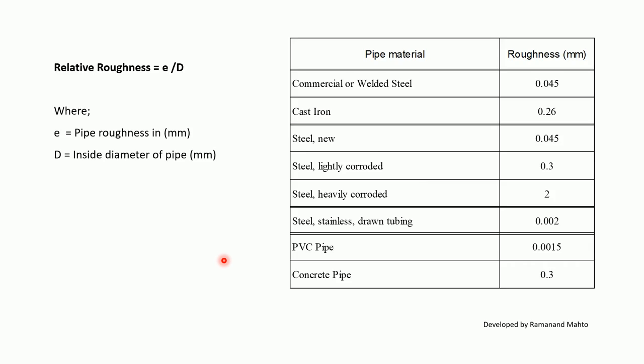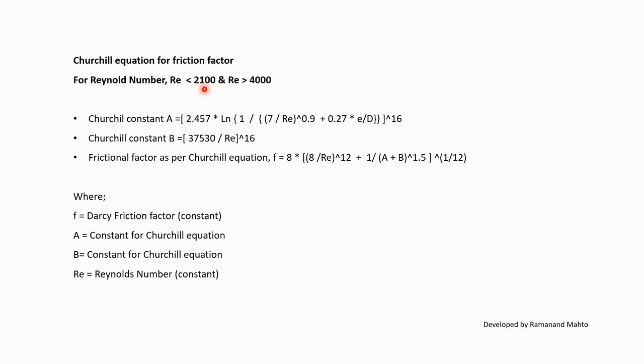Churchill equation for friction factor applies for Reynolds number less than 2100 and greater than 4000. Churchill constant A = (2.457 × ln(1 / ((7/Re)^0.7 + 0.27 × e/D)))^16. Constant B = (37530 / Re)^16. Friction factor: f = 8 × ((8/Re)^12 + 1/(A + B)^1.5)^(1/12), where f is Darcy friction factor, A and B are Churchill constants, and Re is Reynolds number.